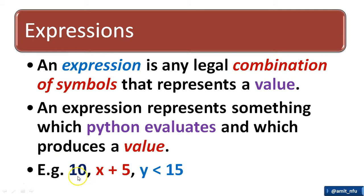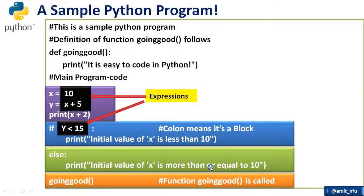Like either it is a value like 10 or x plus 5. In my program x is equal to 10 actually, so 10 plus 5 which means it is producing a value. Here also if y is less than 15 it produces a Boolean value. Yes or no, 1 or 0. That is it.